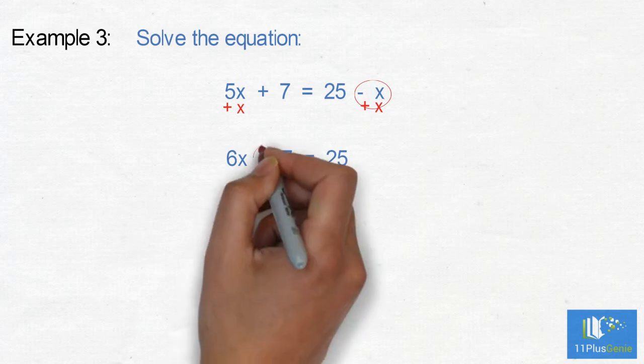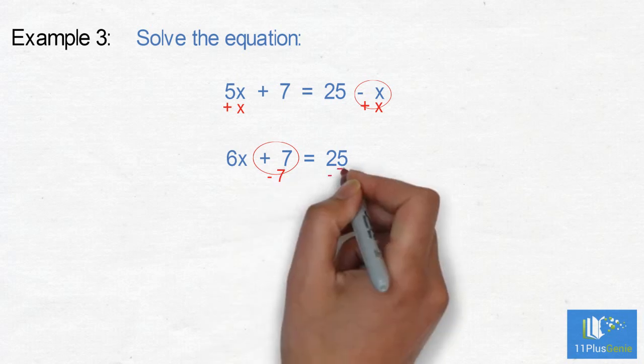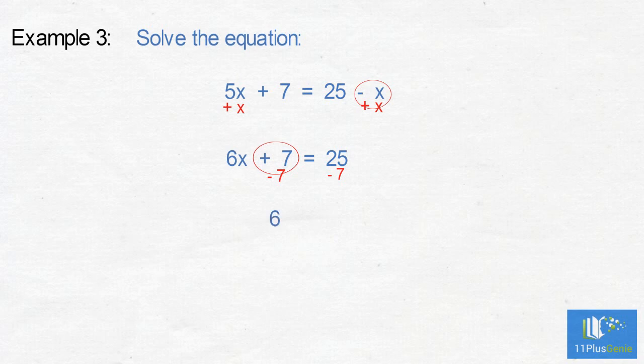We now need to get rid of the plus 7 on the left so we take away 7. We must take away 7 on the right. This simplifies to 6x equals 18. To get x on its own we divide the left side by 6 and we divide the right hand side by 6. Our answer is x equals 3.